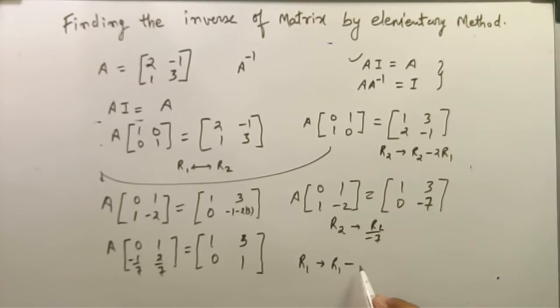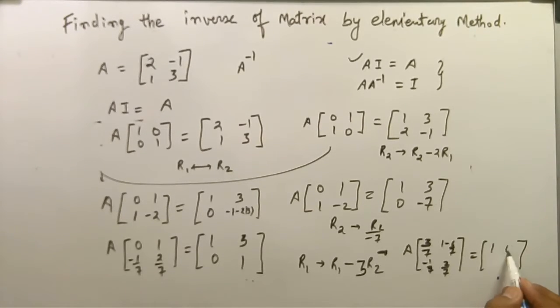We do 7R2. So 3/7, 2/7. I got 3 by 7. Now there are 1, minus 1, 2, 3, 6 by 7, or 2 by 7 as it is. We change to the identity matrix: 1, 0, 0, 1.